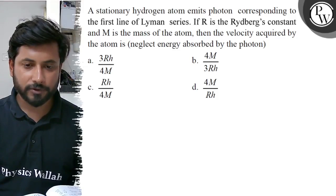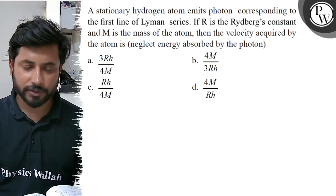Option A: 3Rh by 4M. Option B: 4M by 3Rh. Option C: Rh by 4M. Option D: 4M by Rh.